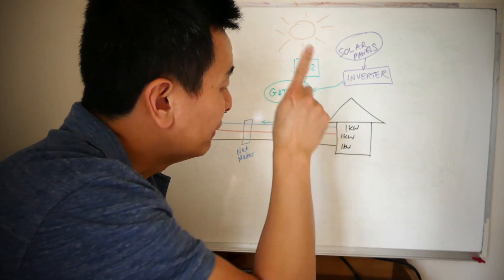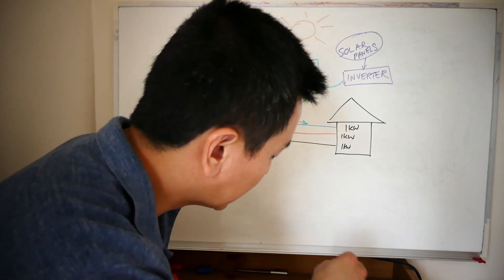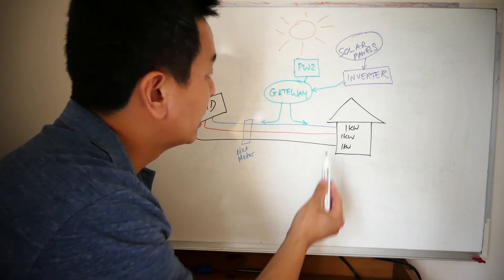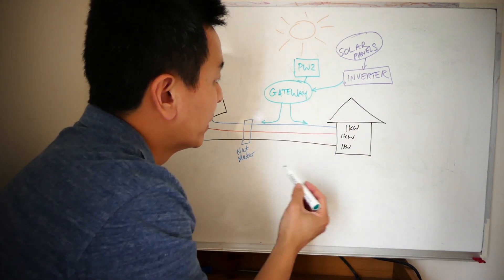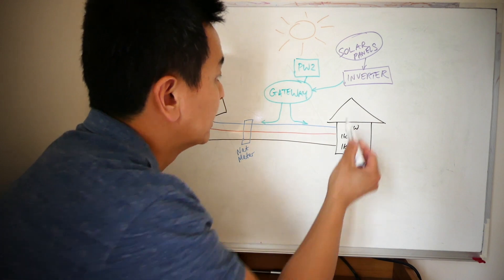If you have a three-phase inverter, now this is where it gets tricky for solar. If you have a three-phase inverter, you can only send one phase from the inverter to the gateway, and the other two phases have to go to the house like this.